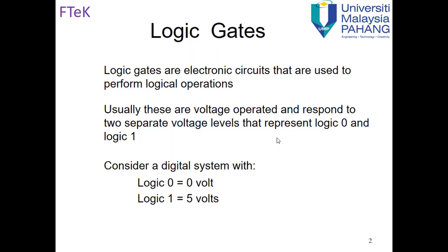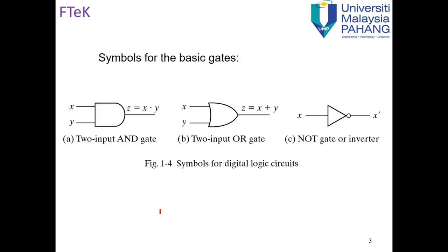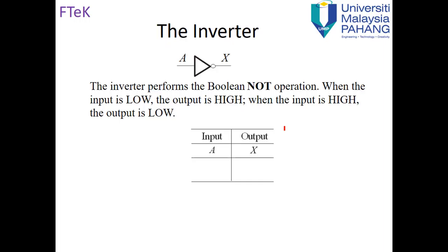So we are speaking about zero for zero volts and one for five volts. Now the three basic gates are AND, OR, and NOT. AND is represented by its specific shape, OR is represented by its shape, and NOT is represented by the inverter shape. Let's speak about them one by one.